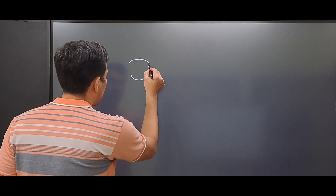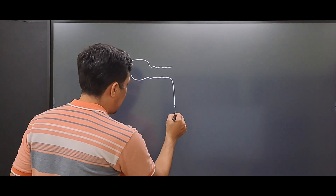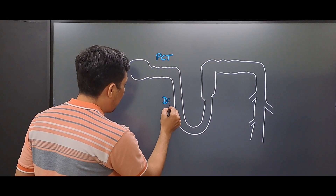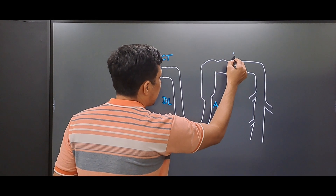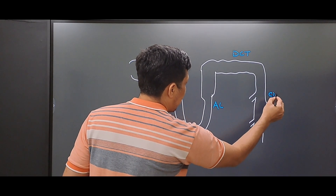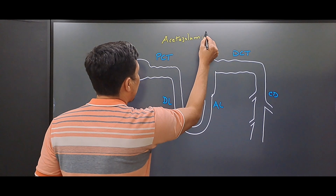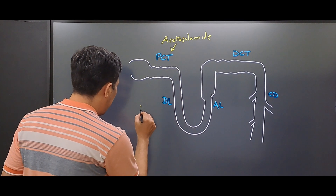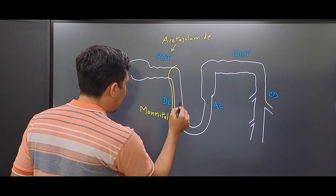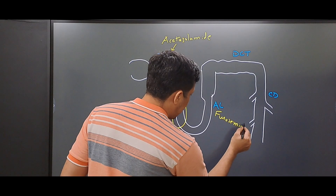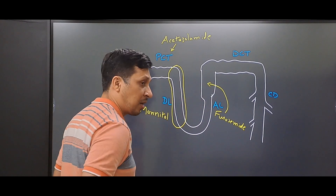Next we look at the site of action and mechanism of action of different diuretics on the nephron. Acetazolamide acts at the proximal convoluted tubule. Mannitol acts on the proximal convoluted tubule and the descending limb. Loop diuretics like furosemide act at the thick part of the ascending limb of the loop of Henle.